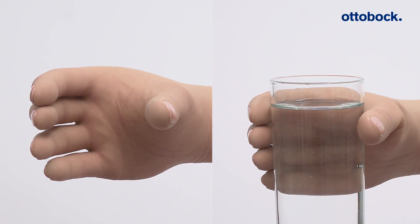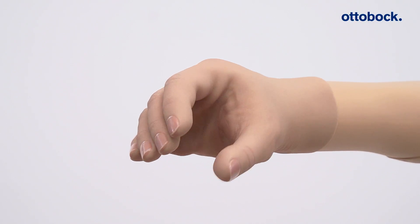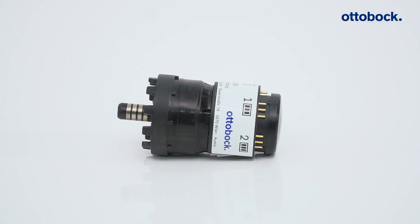For all Meyer box hands, active pronation and supination can be controlled by the Meyer Rotronic in combination with the electric wrist rotator.